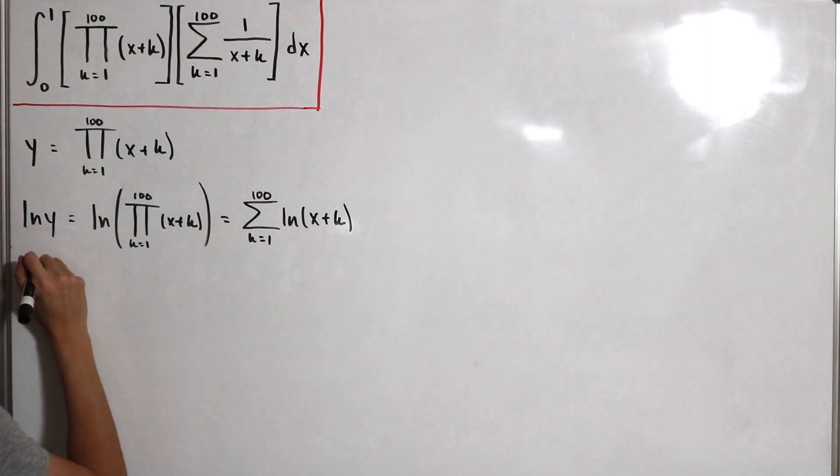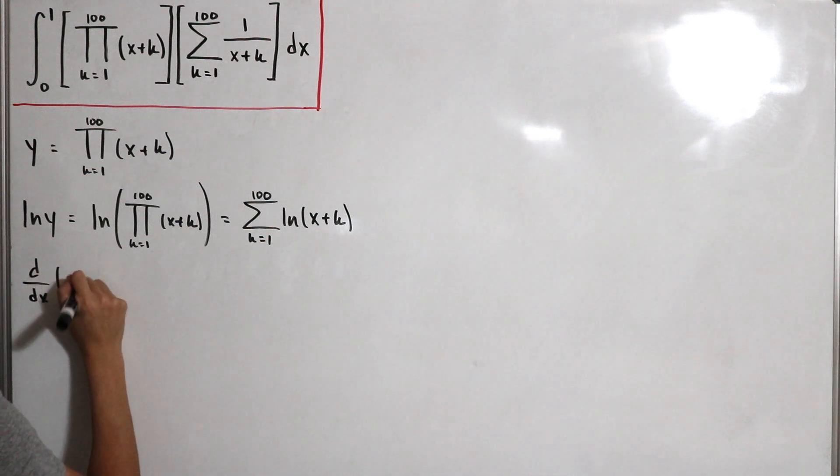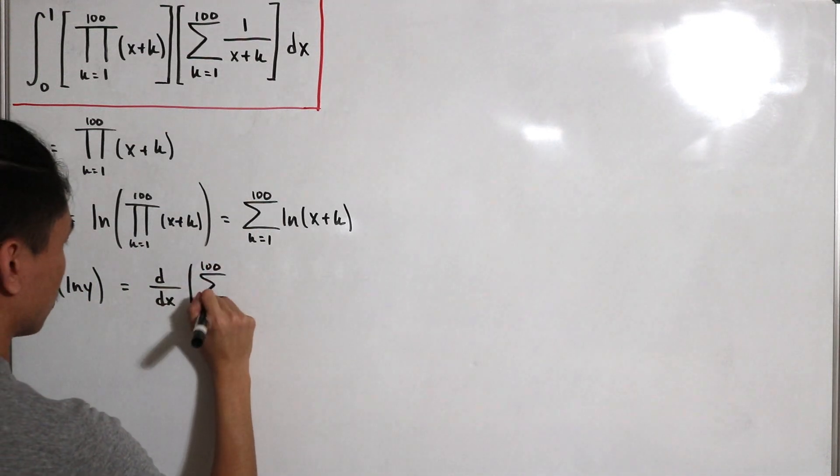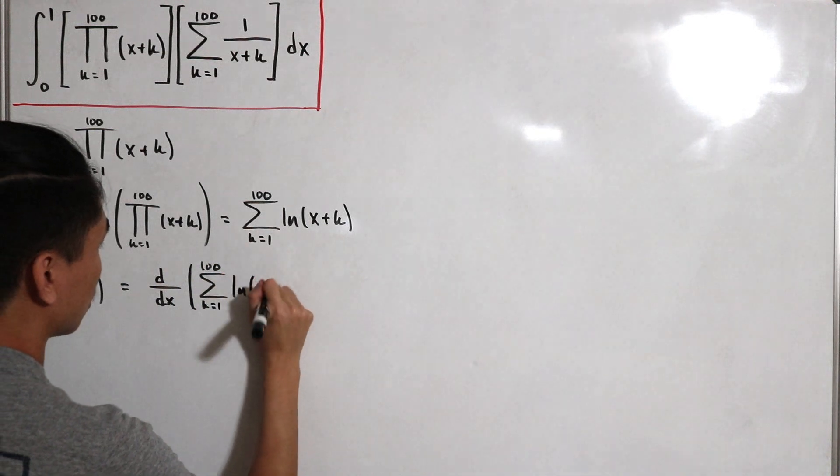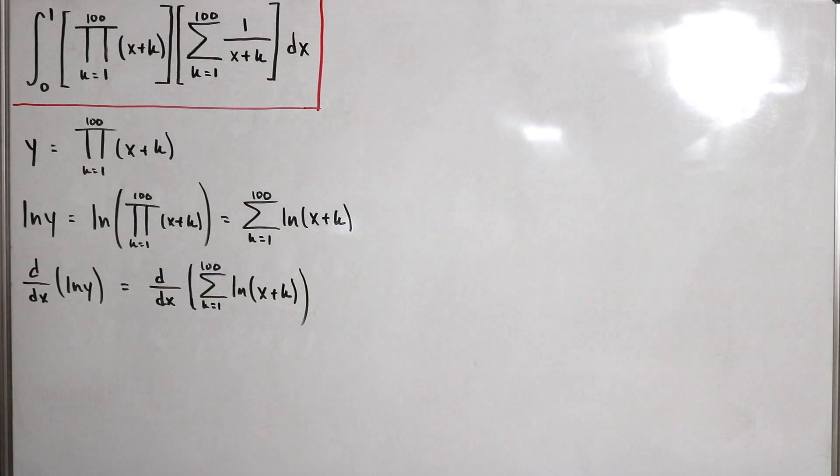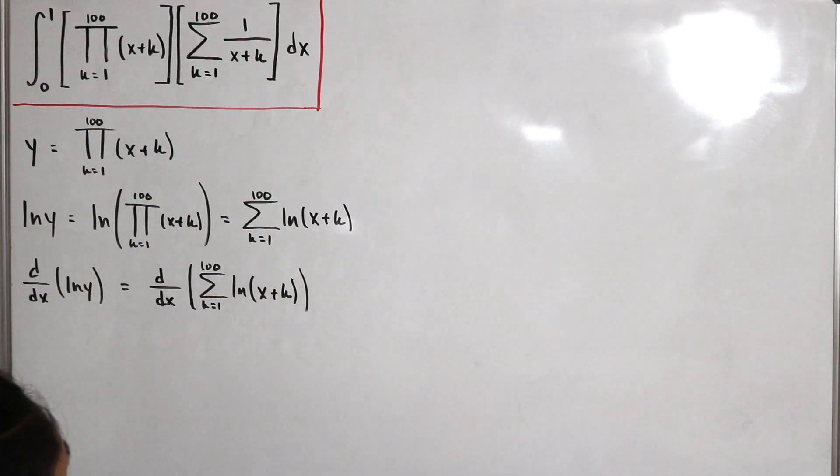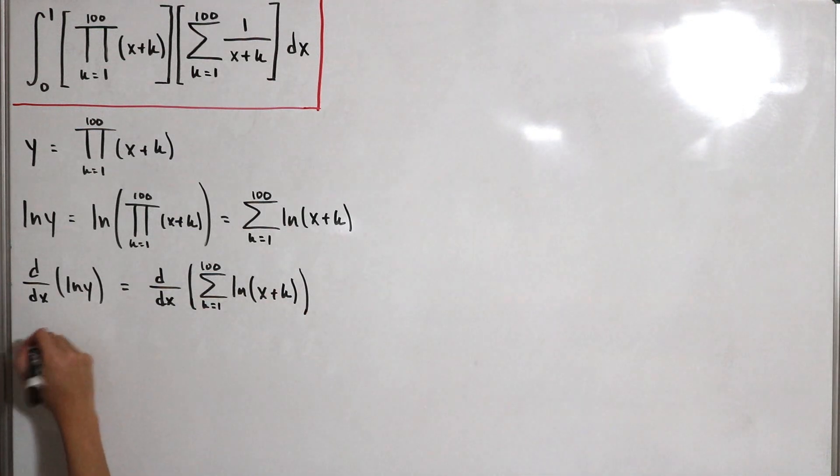We're going to take the derivative of both sides. We have d/dx of ln(y) equals the derivative of the sum from k equals 1 to 100 of ln(x plus k). You'll notice we have to apply implicit differentiation. When we take the derivative of both sides, we have 1 over y, then multiply by dy/dx since we have to take this with respect to x. The derivative of the partial sum gives us the sum from k equals 1 to 100 of 1 over x plus k.